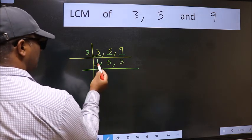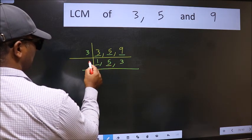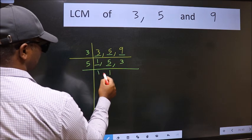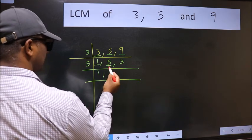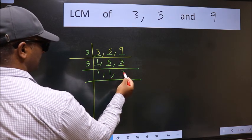Now we got 1 here so focus on the next number 5. 5 is a prime number so 5 goes into 5. The other number 3 is not divisible by 5 so we write it down as it is.